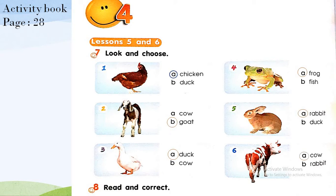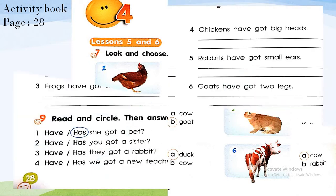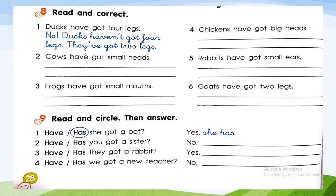Make sure you circle the answers, students, and let's move to exercise 8: read and correct. We have sentences and we have to read and give the right answer. Number one: 'Ducks have got four legs.' Is this true? Of course not. We say: no, ducks haven't got four legs — they have got two legs.